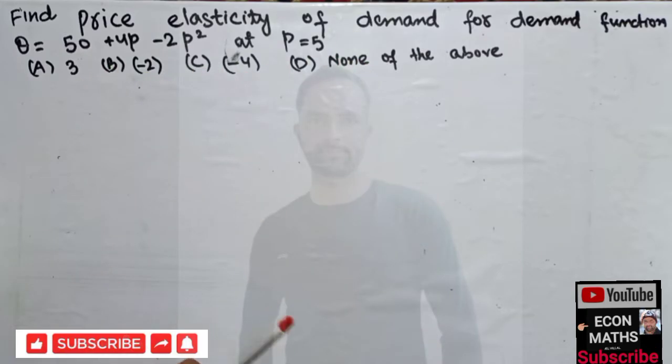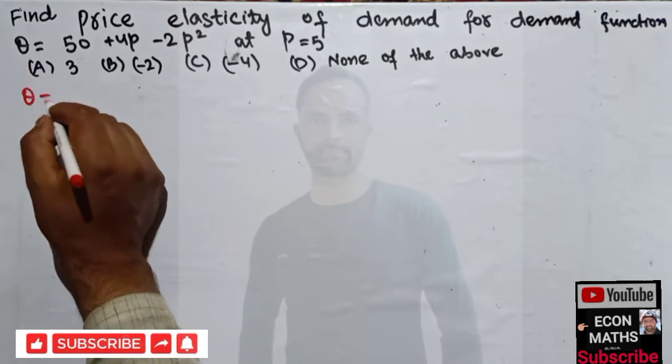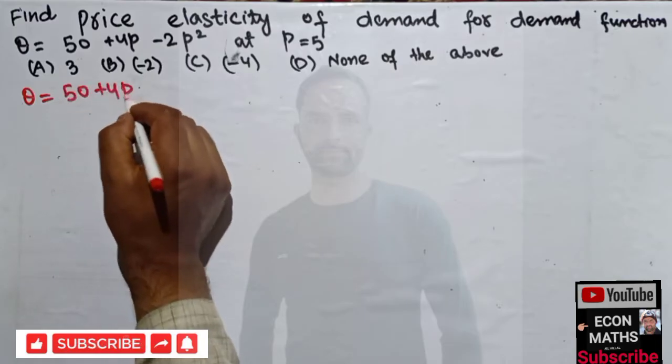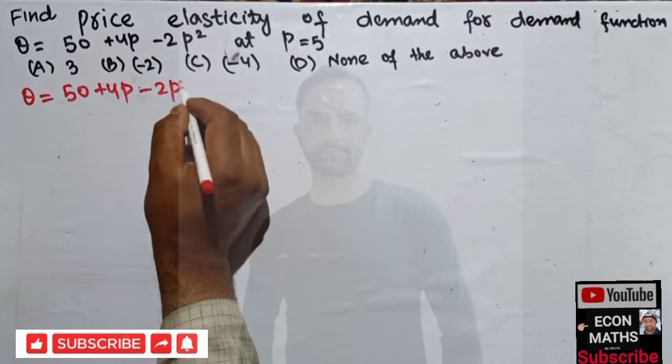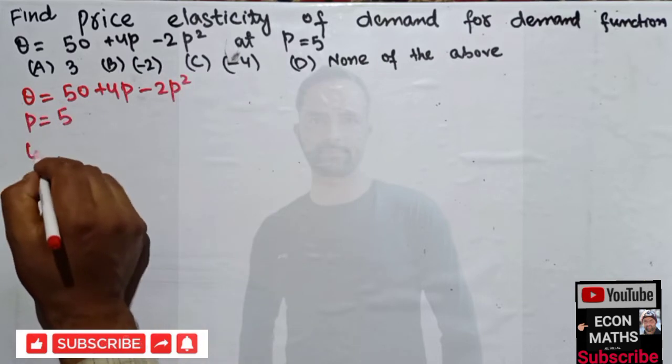So we will see what would be the price elasticity of demand. First, we are given q = 50 + 4p - 2p² and also p is given as 5. Now what would be q?